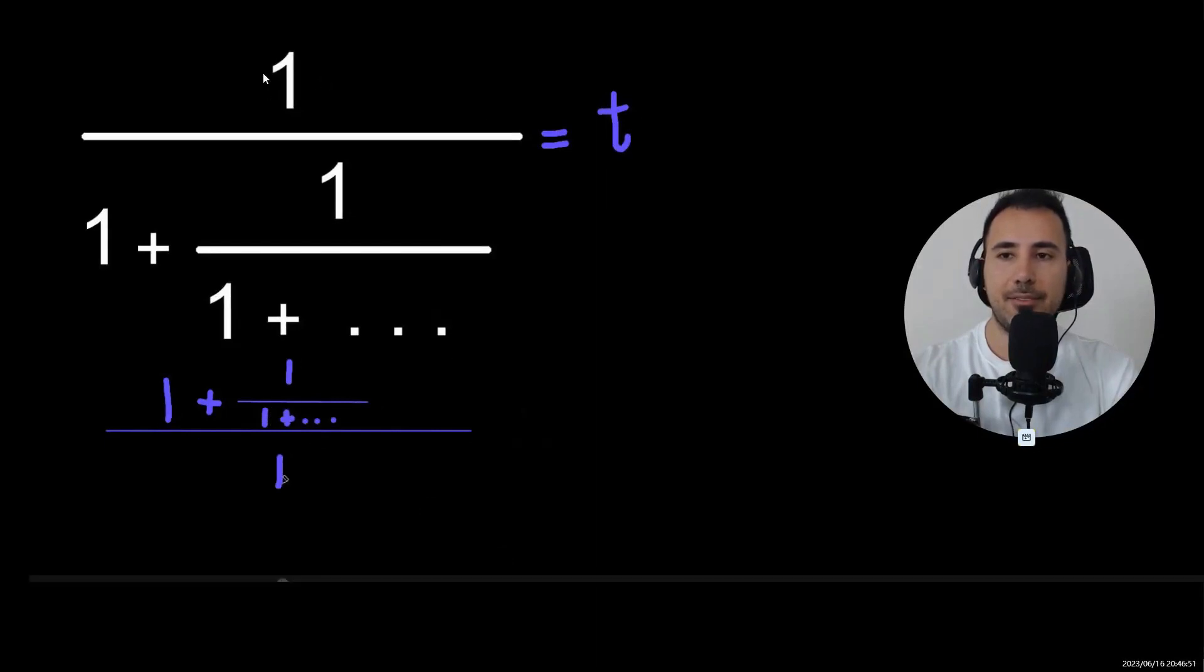You see here we have one over here. If we make the reciprocal of that, one over T, then we could get rid of this one over here. Let's do that.